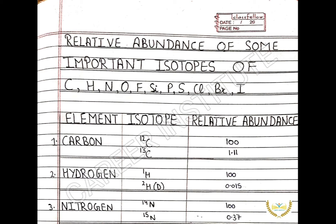When we study the relative abundance of isotopes, we assume the most abundant isotope to be 100%. For carbon: carbon-12 has the relative abundance of 100%, and carbon-13 has the relative abundance of 1.11%.